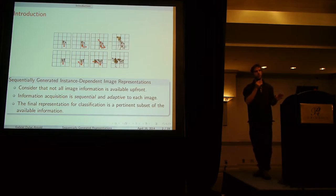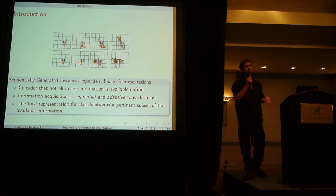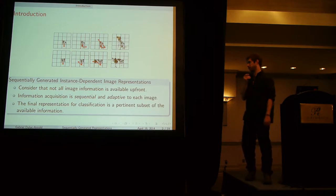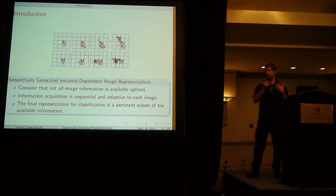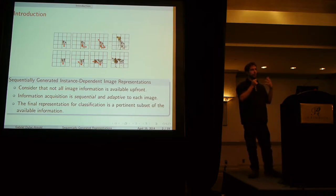The information acquisition here is not only sequential, which means it goes step by step, but it's also adaptive. Each new image being inferred upon is going to have a different path that the classifier follows. What we call the final representation here isn't any sort of latent representation but it's actually just what information was used by the classifier to classify.